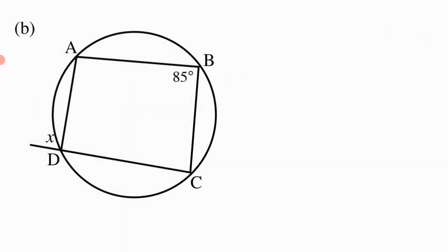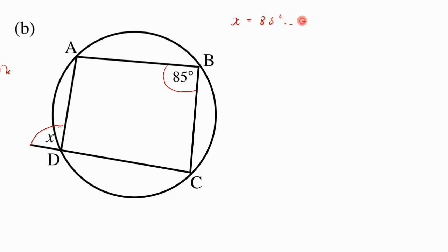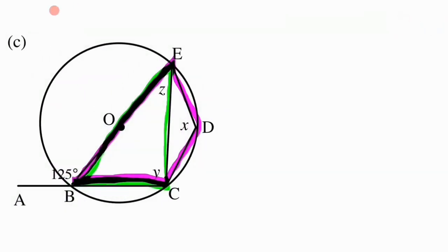Moving to part b, we can see a similar case. We are given x, which is an exterior angle of a cyclic quad, and it should be equal to the opposite interior angle. So x is equal to 85 degrees — exterior angle of cyclic quad.